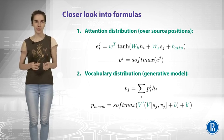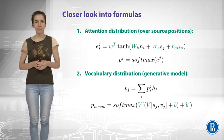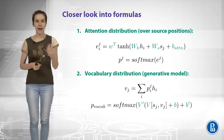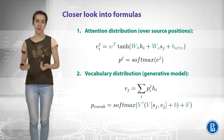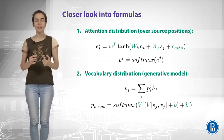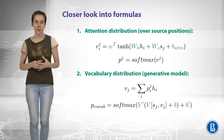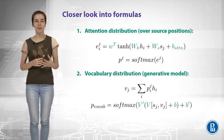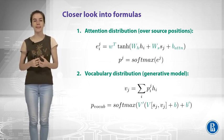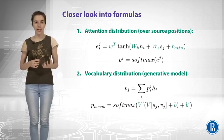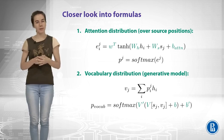First, attention distribution. H is the encoder states and S is the decoder states. We use both of them to compute the attention weights, and we apply softmax to get probabilities. Then we use these probabilities to weight encoder states and get Vj. Vj is the context vector, specific for position j of the decoder.